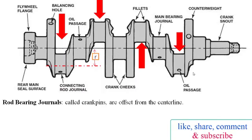The rod bearing journal, or connecting rod journal, is also called the crank pin, which is offset from the crank center line. Insert type bearings fit between the big end of the connecting rod and crank pin.